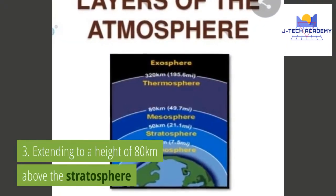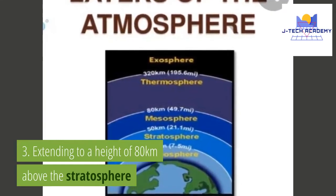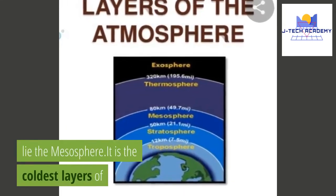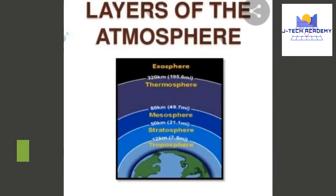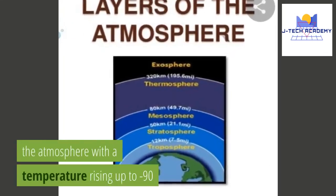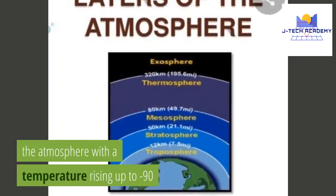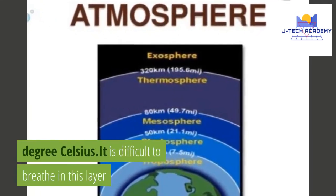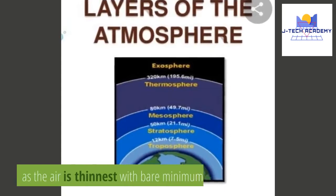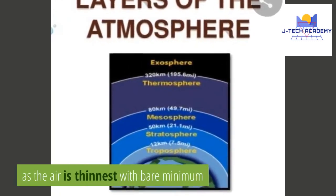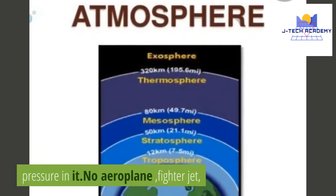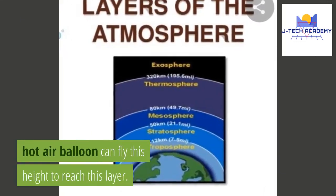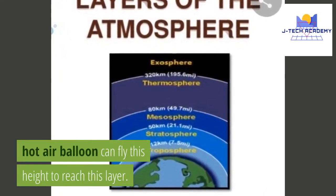3. Mesosphere. Extending to a height of 80 km above the stratosphere lies the mesosphere. It is the coldest layer of the atmosphere with a temperature rising up to minus 90 degrees Celsius. It is difficult to breathe in this layer as the air is thinnest with bare minimum pressure. No aeroplane, fighter jet, or hot air balloon can fly high enough to reach this layer.